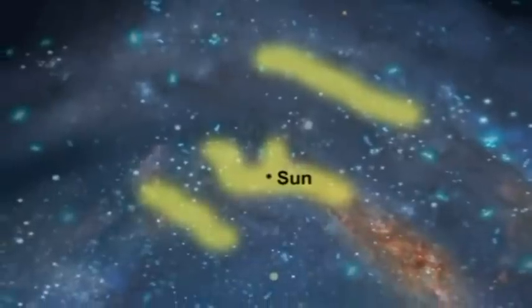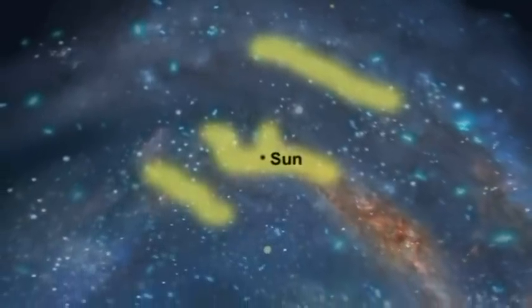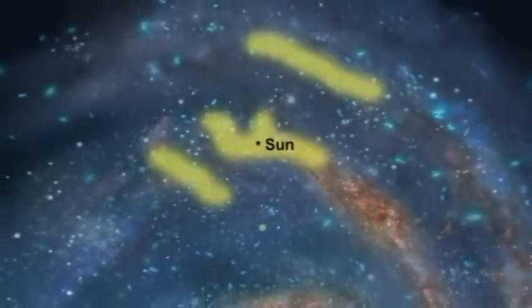In this drawing, the spiral arms that we see as the Milky Way are shown by the yellow lines.